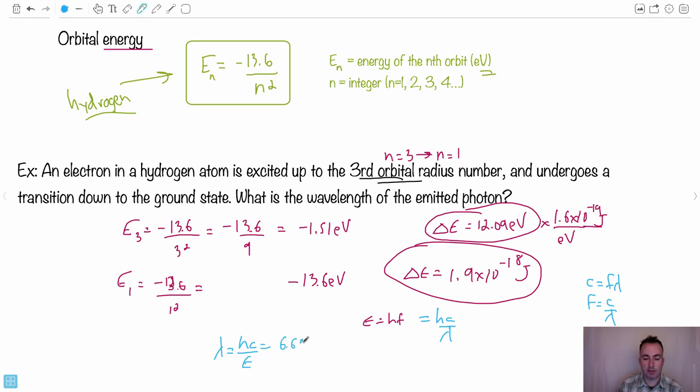Let's put in the numbers: 6.63 times 10 to the minus 34 times C, which is 3 times 10 to the 8, all that divided by the energy in joules, which is 1.9 times 10 to the minus 18. Let's try this out. I'm going to save that answer. So 6.63 times 10 to the minus 34 times 3 times 10 to the 8, all that divided by my answer that I just got.